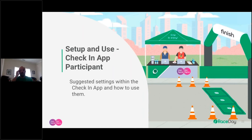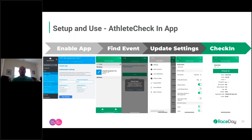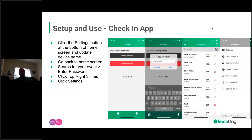Now we'll press on to setting up and using the check-in app for participants. For many of you who have used this before, this is a review — feel free to roll off. But if you haven't spent much time on the check-in app or haven't played with configurations and presets, this is a great chance to see some suggested uses. The flow is similar: enable the app, click the event, click Participants, go into Settings, change presets, then go into Check-In.